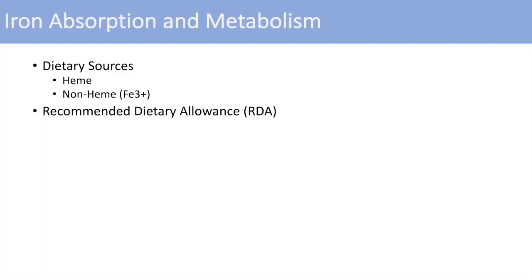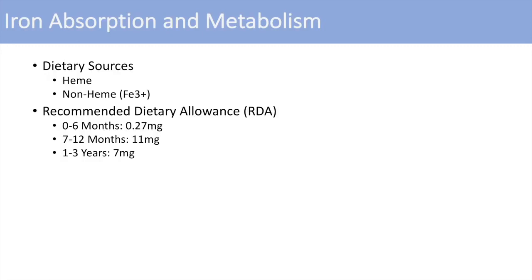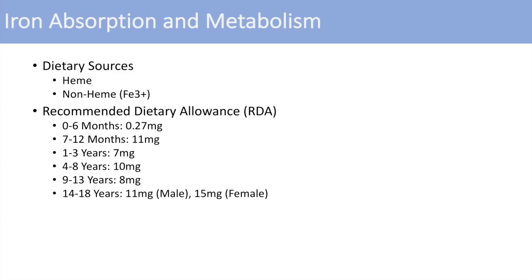How much iron should you eat every day? The recommended dietary allowance differs depending on age and population. In early life, 0 to 6 months, you only need 0.27 milligrams per day. At 7 to 12 months, about 11 milligrams per day. Ages 1 to 3 years need about 7 milligrams, 4 to 8 years need 10 milligrams, and 9 to 13 years need 8 milligrams. During puberty at ages 14 to 18, males typically need 11 milligrams while females need about 15 milligrams, due to menses and blood loss during periods.